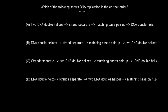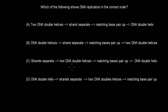Next question. Which of the following shows DNA replication in the correct order? A. Two DNA double helixes → strands separate → matching bases pair up → DNA double helix. B. DNA double helix → strands separate → matching bases pair up → two DNA double helixes. C. Strands separate → two DNA double helixes → matching bases pair up → DNA double helix. D. DNA double helix → strands separate → two DNA double helixes → matching bases pair up. Pause the video and attempt the question.